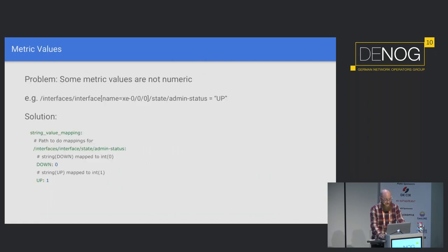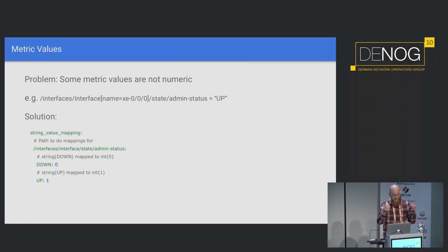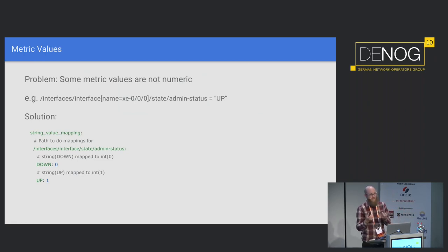But there is one issue: the values that OpenConfig streaming telemetry sends to the monitoring station might not be an integer or a float but can also be a string, and Prometheus cannot store strings as values for time series. So we have to map certain strings to certain discrete integer or float values. What I've implemented in this exporter is a config parameter called string value mapping — you specify a path of a certain metric and then the value, like the string 'down', and what integer value you want to map it to. That is unfortunately the only thing you need to maintain manually and is not solvable automatically.